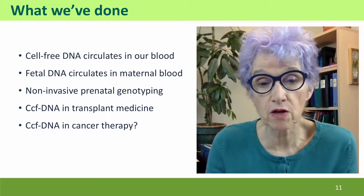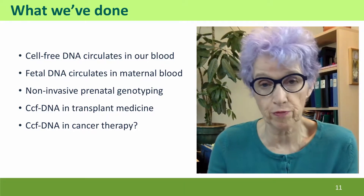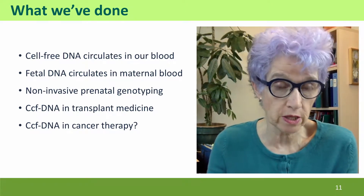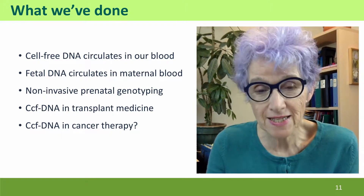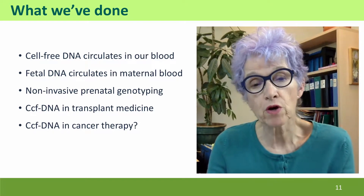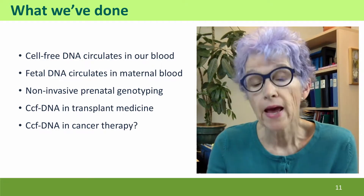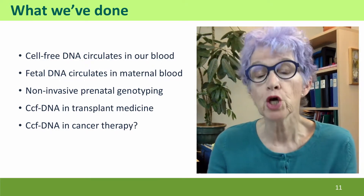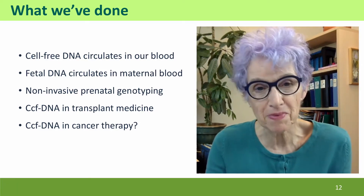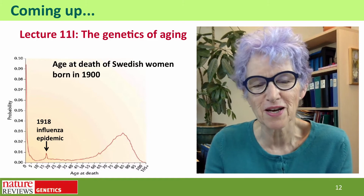So we've talked about cell-free DNA in our blood — in particular about fetal DNA circulating in a pregnant woman's blood, and how that can be used for non-invasive prenatal genotyping that's cheaper, easier, safer, and often more accurate than conventional methods. We talked about how circulating DNA can also be used to monitor the progress of an organ transplant, and about the possibility that it can be used for improving cancer therapies. Coming up next, for all you seniors taking the course, we're going to talk about the genetics of aging. I hope to see you there.